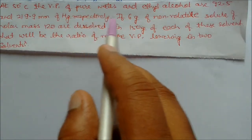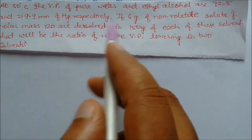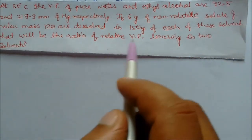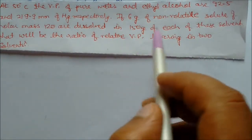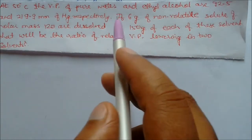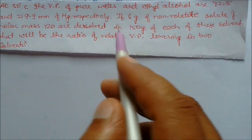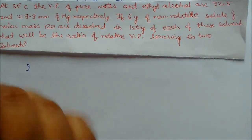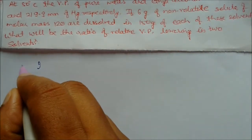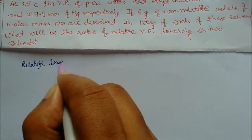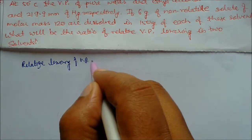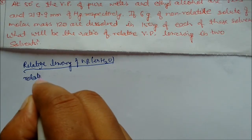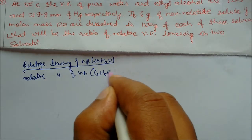At 50 degrees centigrade, the vapor pressures of pure water and ethanol are 92.5 and 292.9 mm Hg respectively. 6 grams of a non-volatile solid of molar mass 120 are dissolved in 150 grams each of these solvents. What is the ratio of relative vapor pressure lowering in the two solvents? We take the ratio of relative lowering in water to relative lowering in ethanol using the mole fraction formula.